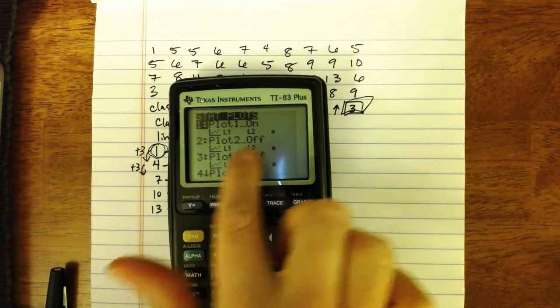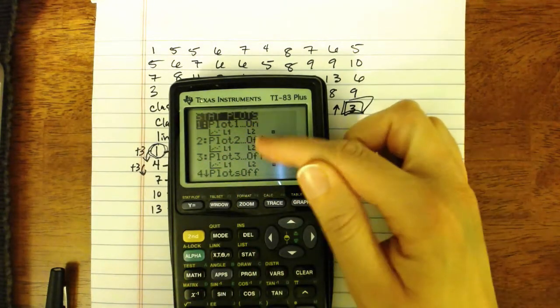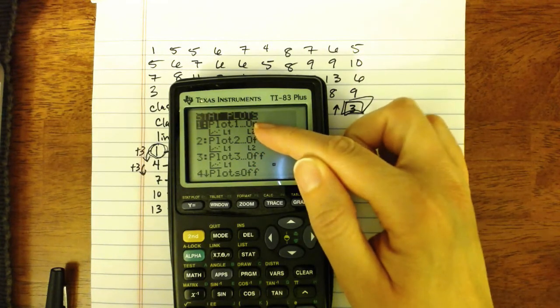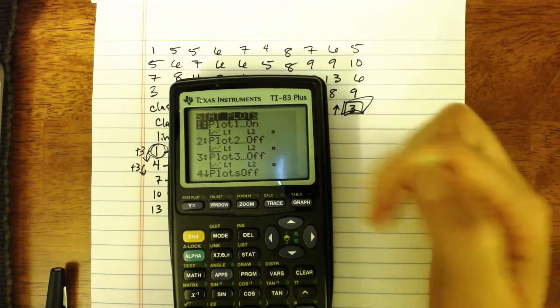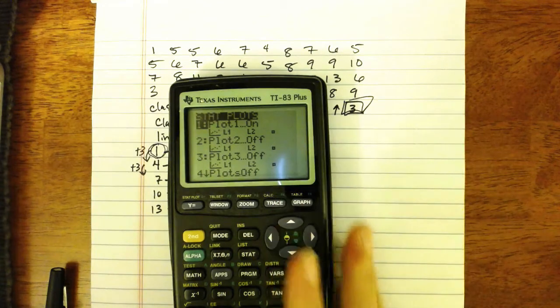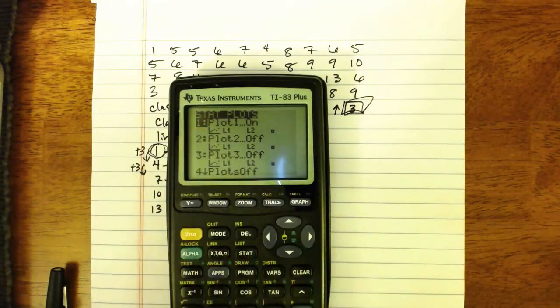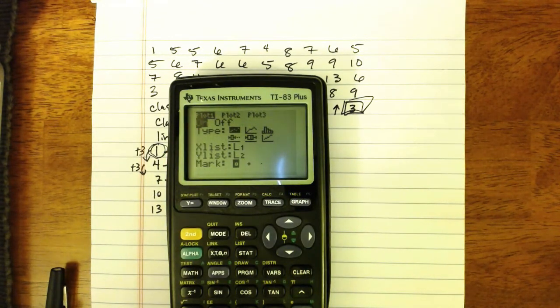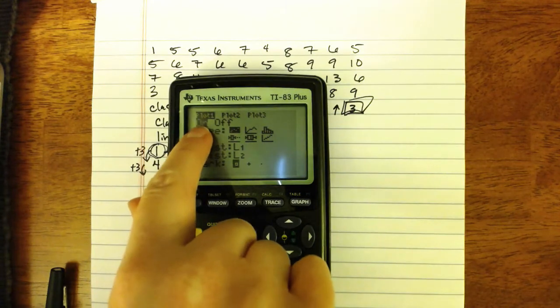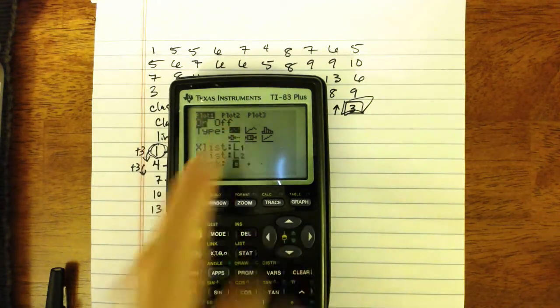You have three plots to choose from and you want to make sure that only one of them is turned on at a time. You can see here my first one is on, the other two are off. I'm going to press enter to select plot 1.